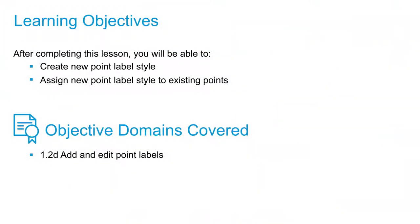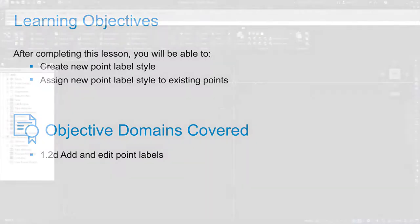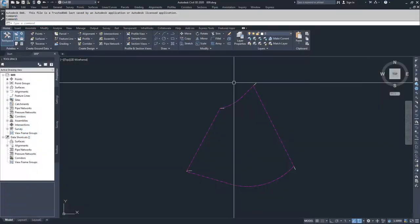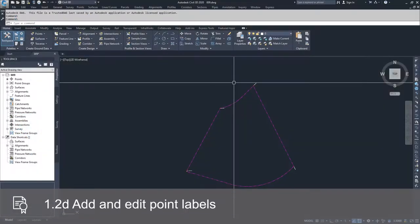In this video, we're going to create a new point label style and assign it to the existing points inside of the drawing. To do this, it's very similar to creating our new point marker style and assigning it to our existing points.